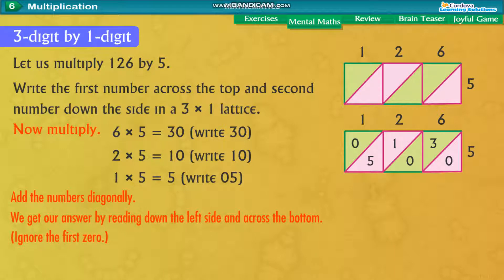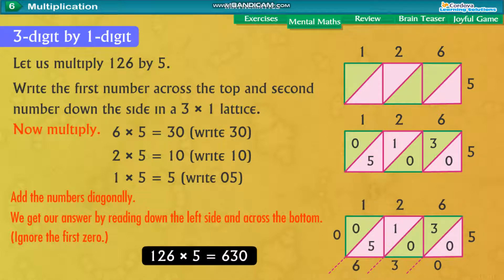Add the numbers diagonally. We get our answer by reading down the left side and across the bottom. Ignore the first 0. 126 into 5 equal to 630.